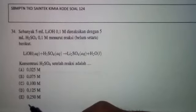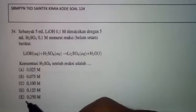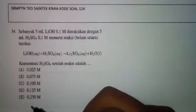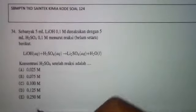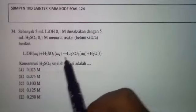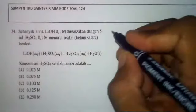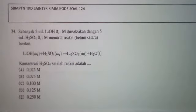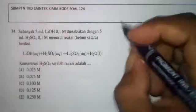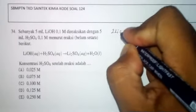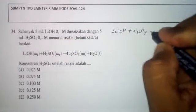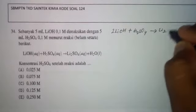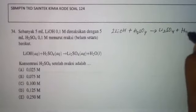Untuk mengerjakan soal berikut, tentu saja langkah pertama adalah setarakan persamaan yang ada. Karena jika persamaan reaksinya belum setara, pekerjaan kita akan menjadi salah. Kita lihat, kalau di sini Li-nya 1, di sana Li-nya 2, sehingga menjadi: 2LiOH + H2SO4 → Li2SO4 + H2O.